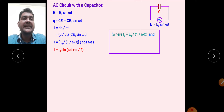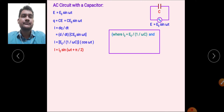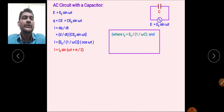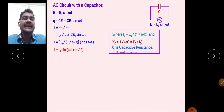Writing i₀ in place of e₀/(1/Cω), the expression becomes i = i₀ cos(ωt). We convert cos(ωt) to sin(ωt + π/2), because the EMF is expressed as a sine function and we want current in the same form. Since sin(ωt + π/2) equals cos(ωt) — as sine is positive in the second quadrant — the current is i = i₀ sin(ωt + π/2).